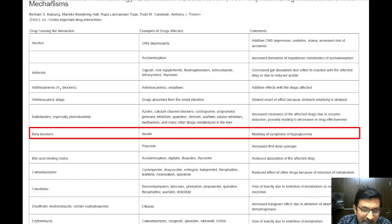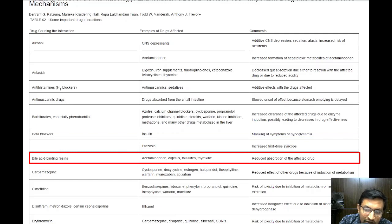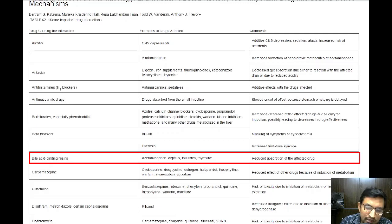Bile acid binding resins, which are used to lower blood cholesterol levels, can reduce the absorption of other drugs such as acetaminophen, digitalis, diuretics like thiazides, and thyroid hormones like thyroxine. This occurs because these resins bind to the drugs in the intestine, preventing them from being absorbed into the bloodstream.